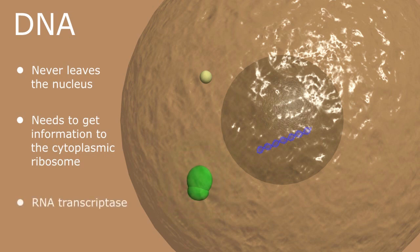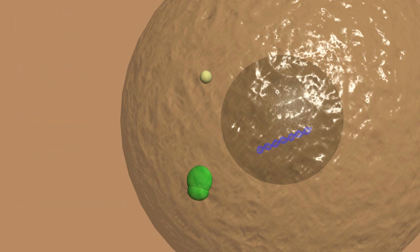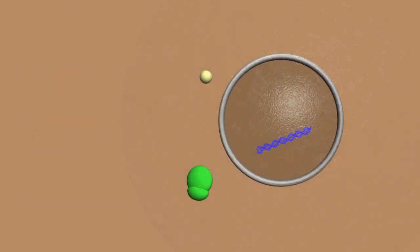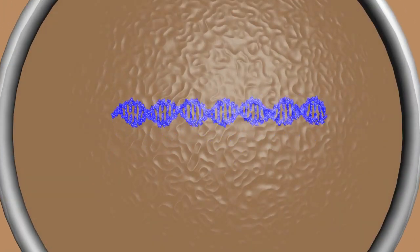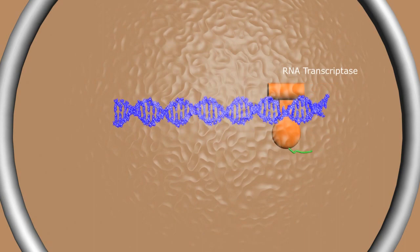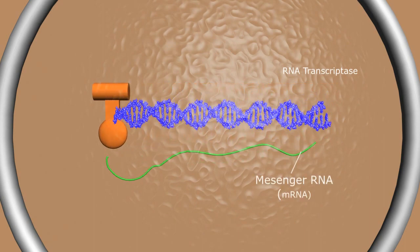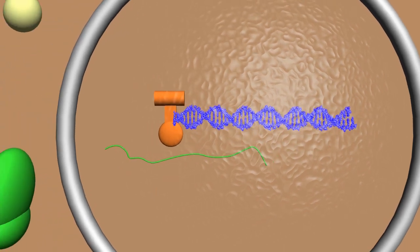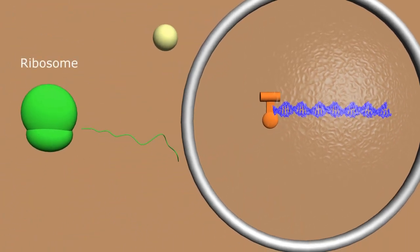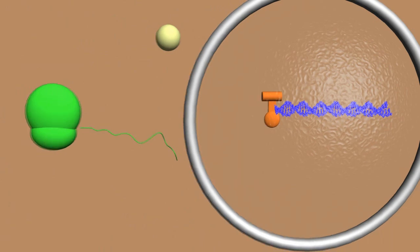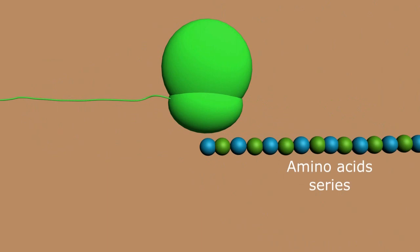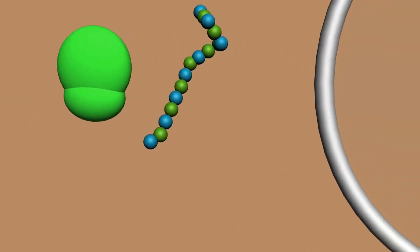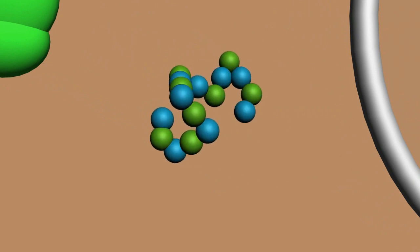Our precious DNA, the blueprint of our entire existence, never leaves the protection of the nucleus, but somehow needs to get its encoded information to the ribosomes in the cytoplasm for protein production. This is done through RNA transcriptase. The transcriptase reads the genetic code and produces messenger RNA or mRNA. This genetic template can leave the nucleus and enter the cytoplasm. The ribosome, with a large and small subunit, then reads the messenger RNA, assembling a series of amino acids into a specific order, which then fold into complex 3D geometry producing all the necessary structural and enzymatic proteins that keep us alive.